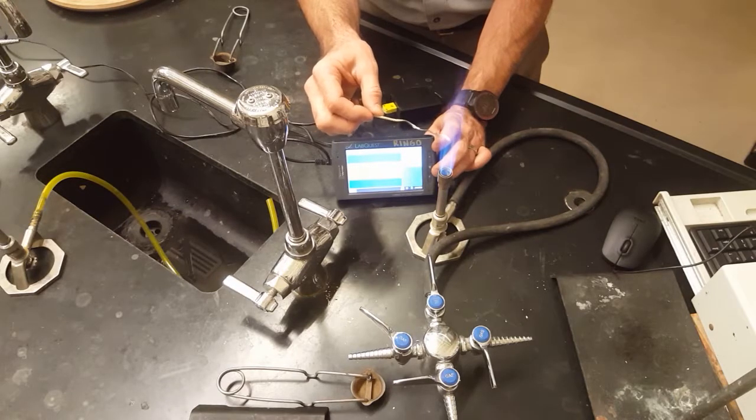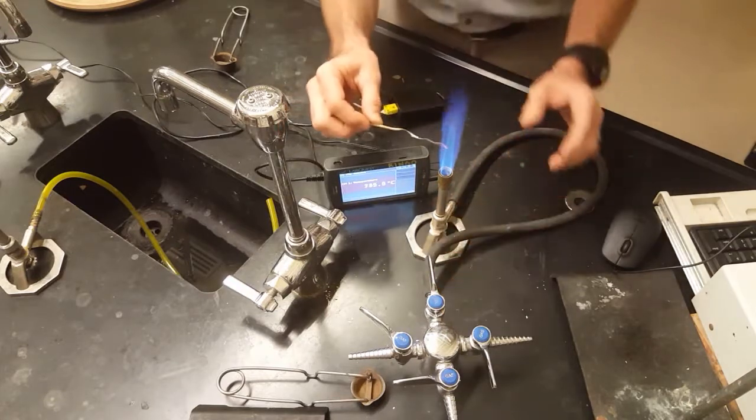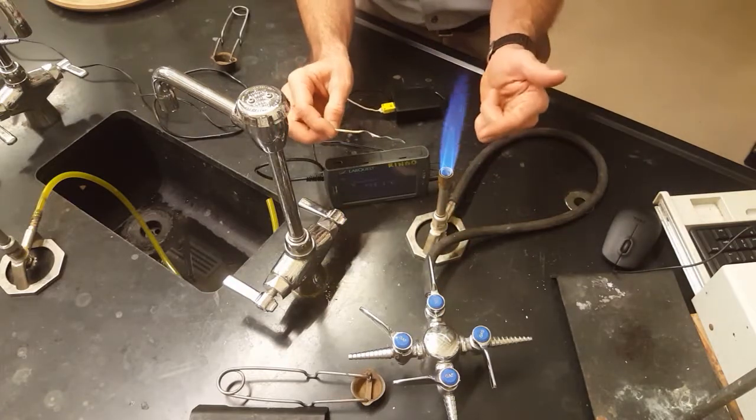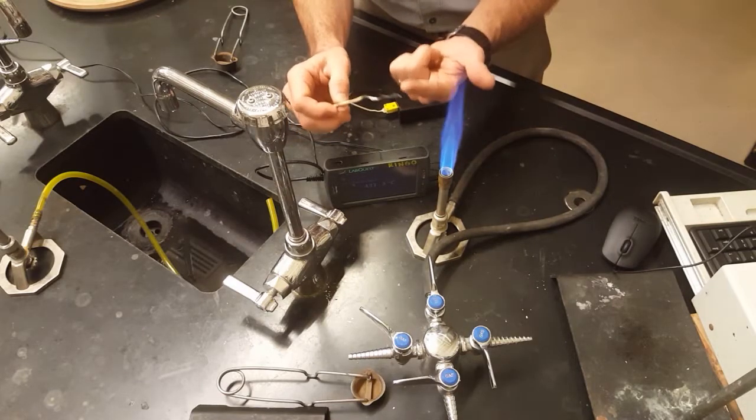Whatever you do, don't ever put a real thermometer in here because you'll melt it. The thermocouple is the only temperature measuring device we can put in the Bunsen burner flame.